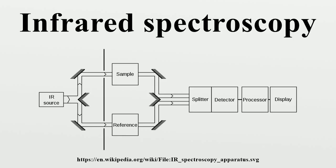The higher energy near IR, approximately 14,000 to 4,000 cm⁻¹, can excite overtone or harmonic vibrations. The mid-infrared, approximately 4,000 to 400 cm⁻¹, may be used to study the fundamental vibrations and associated rotational-vibrational structure.